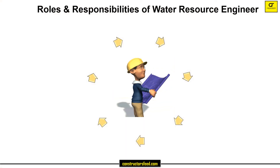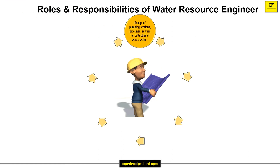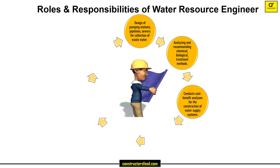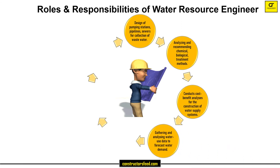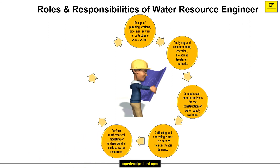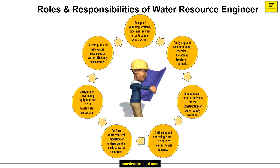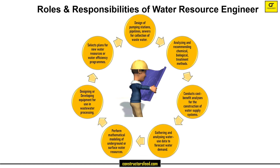Some of the roles and responsibilities of a water resource engineer include design of pumping stations, pipelines, and sewers for collection of wastewater; analyzing and recommending chemical and biological treatment methods; conducting cost-benefit analyses for the construction of water supply systems; gathering and analyzing water use data to forecast water demand; performing mathematical modeling of underground or surface water resources; and designing or developing equipment for use in wastewater processing and selecting plans for new water resources or water efficiency programs.